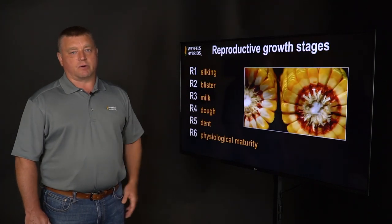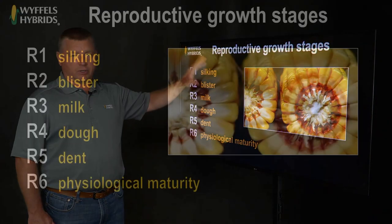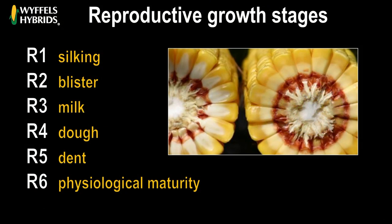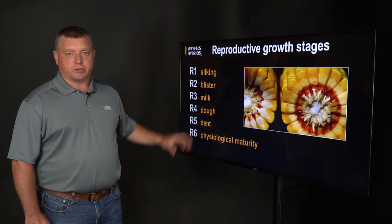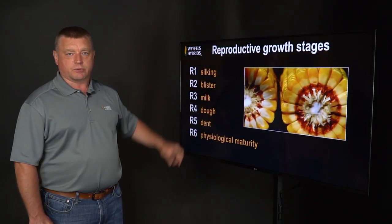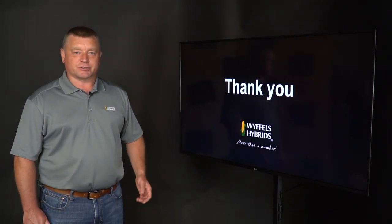After the vegetative stage and tassel emergence, we go into the reproductive stages of corn growth and development, starting with silking. When you start to see silks on the ears, that denotes the R stages of growth, continuing all the way through physiological maturity. We'll be covering the reproductive growth stages in more depth in another Corn 101 series video. Thanks for taking the time to watch.